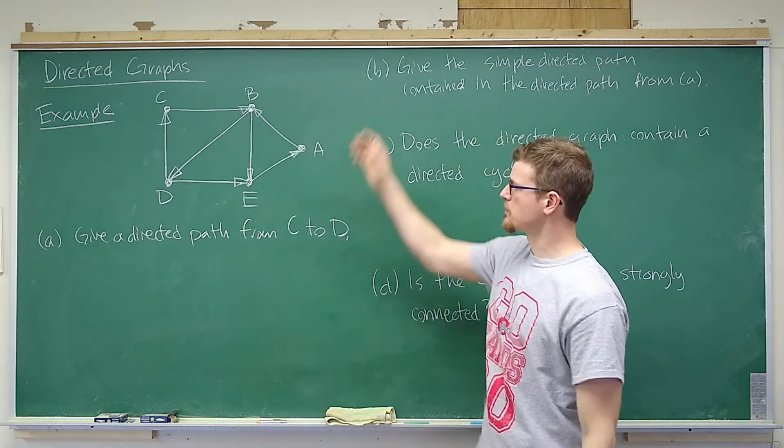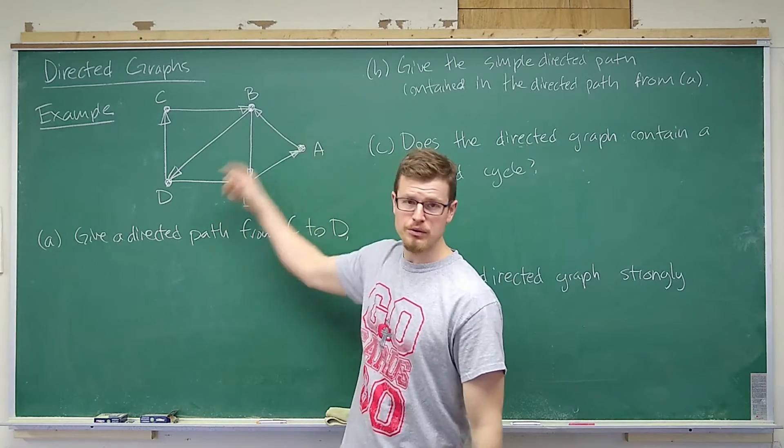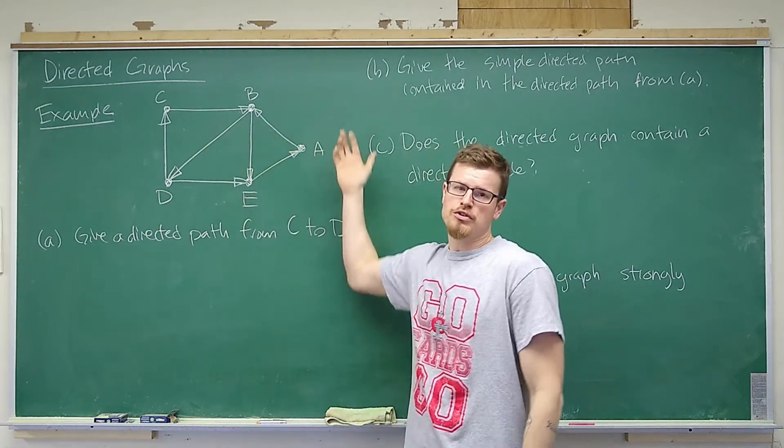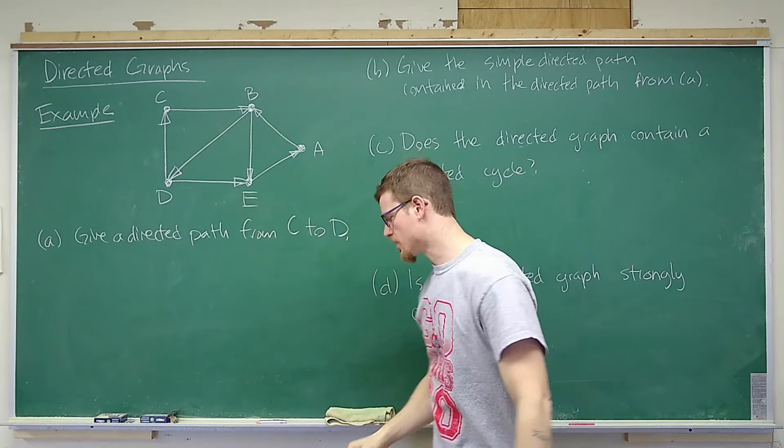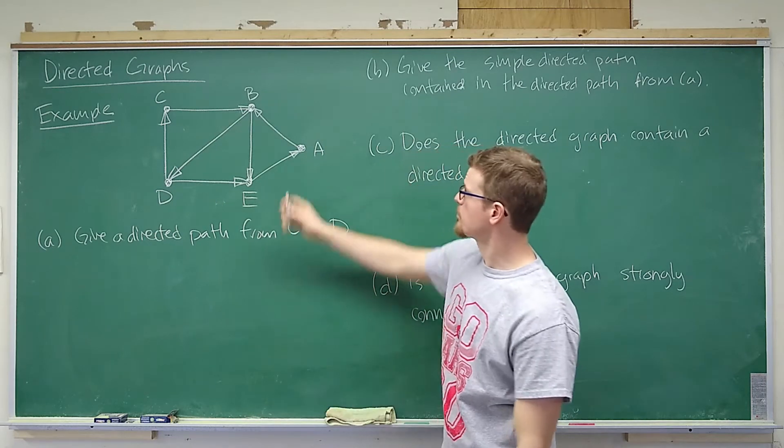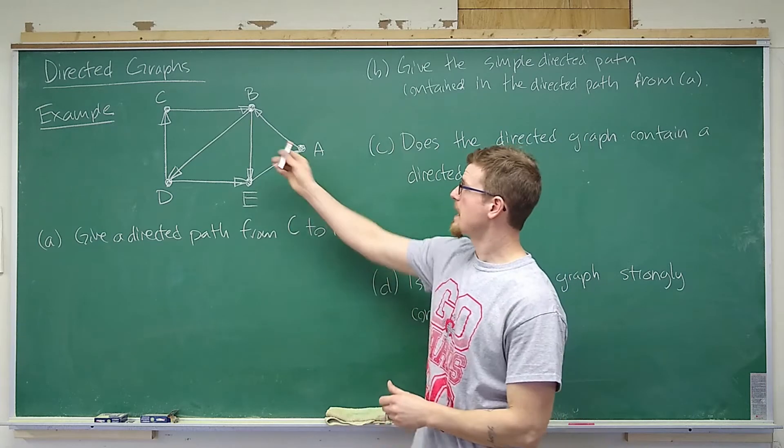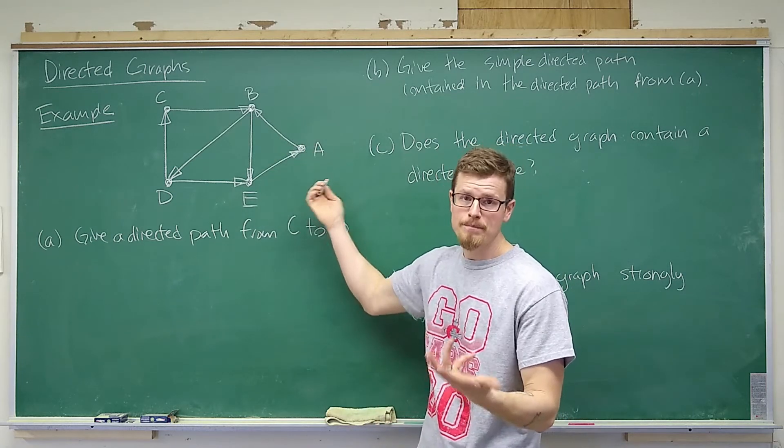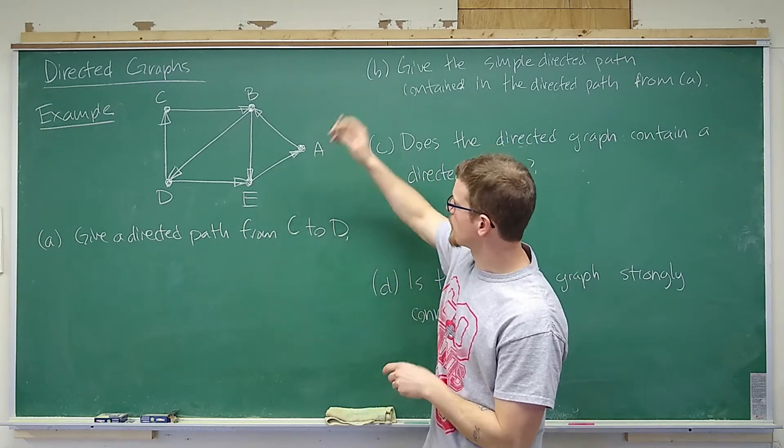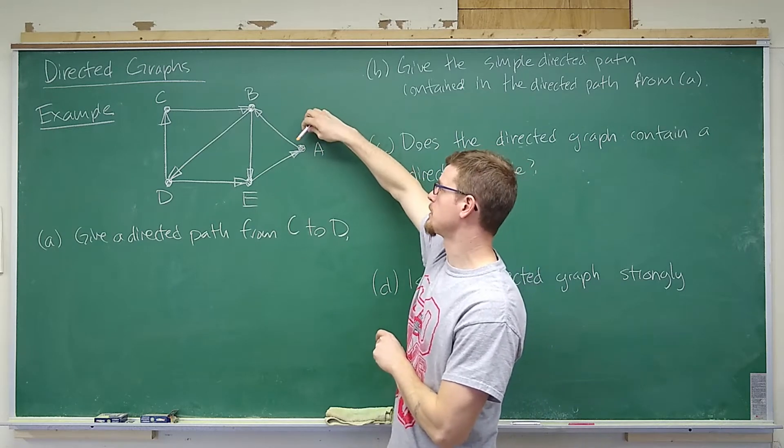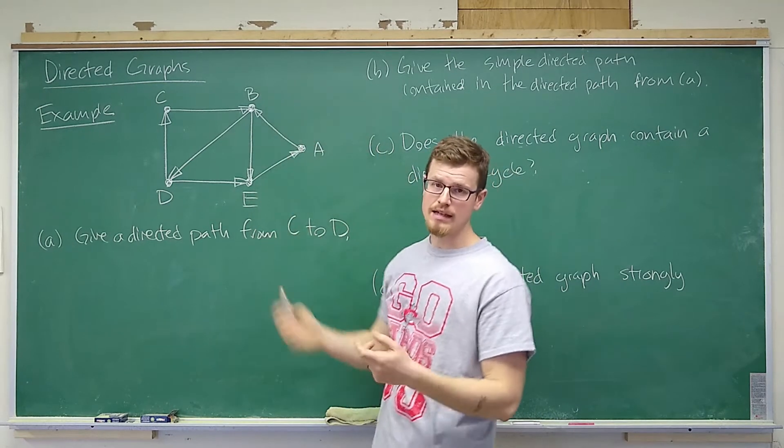So a directed path is just a path that follows along the edges, but in this case we can only travel one particular direction along each edge. So for example I cannot travel from A to E because that edge goes from E to A. If I wanted to leave A the only choice I have is to go from A to B.